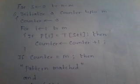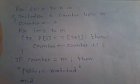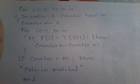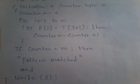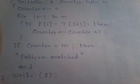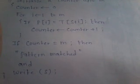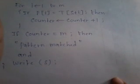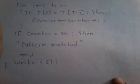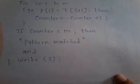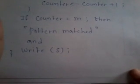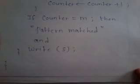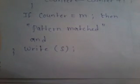For S equal to 0 to N minus M, we initialize the counter up to M. The counter's value is initialized to 0. A loop is constructed from i equal to 1 to M, which matches each and every character of pattern P with characters of T. When any character matches, the counter is incremented. After the loop, if the counter's value is equal to M, which is the length of P, then the pattern is matched and we write the value of shift S.